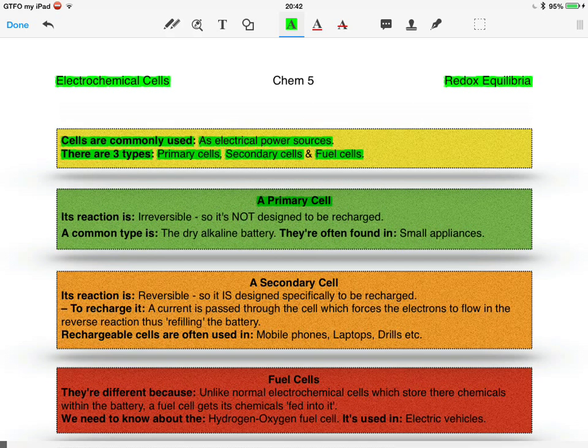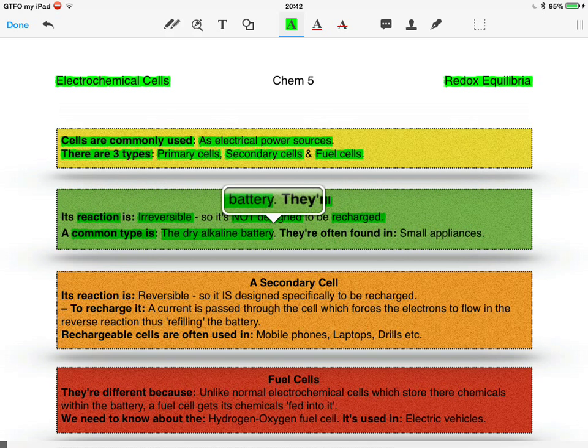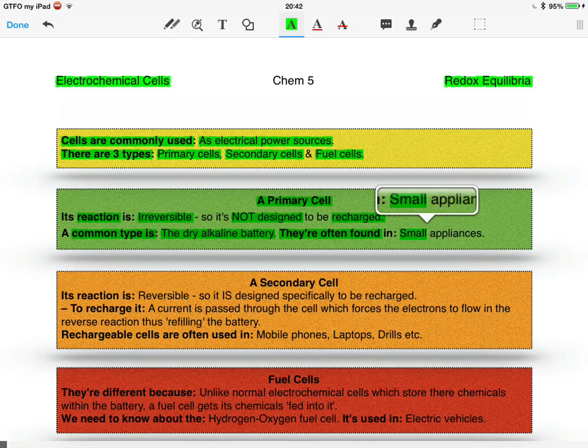A primary cell, its reaction is irreversible, so it's not designed to be recharged. A common type is a dry alkaline battery, and these are often found in small appliances such as TV remotes and torches.